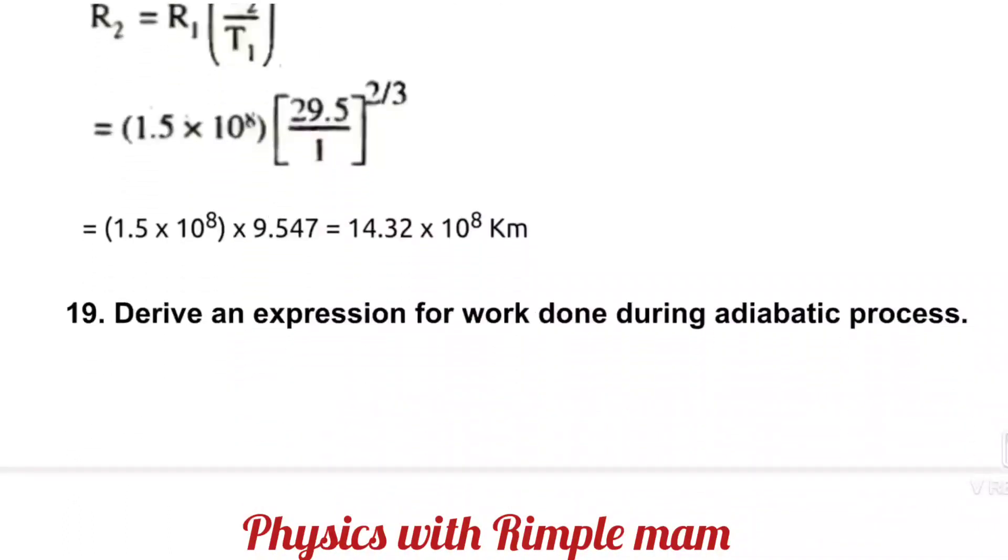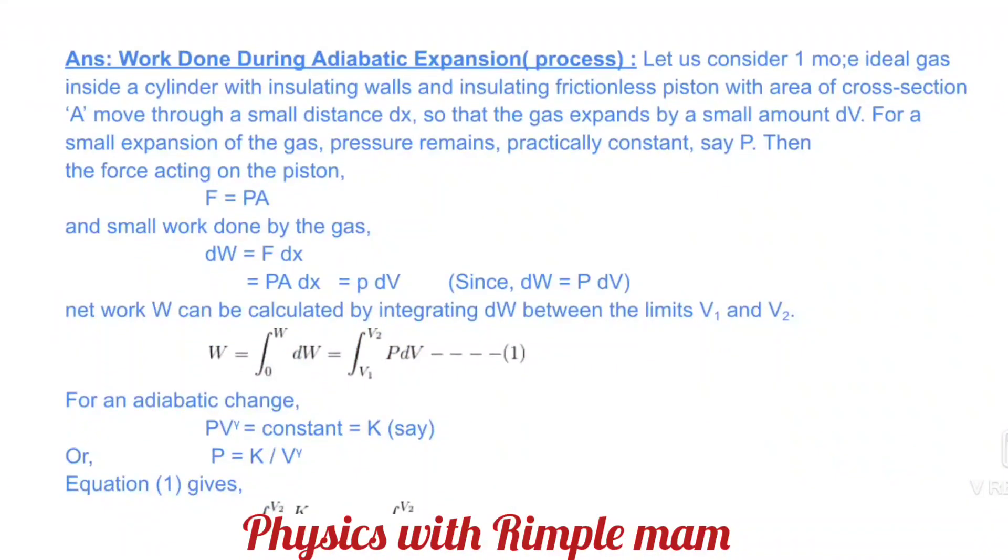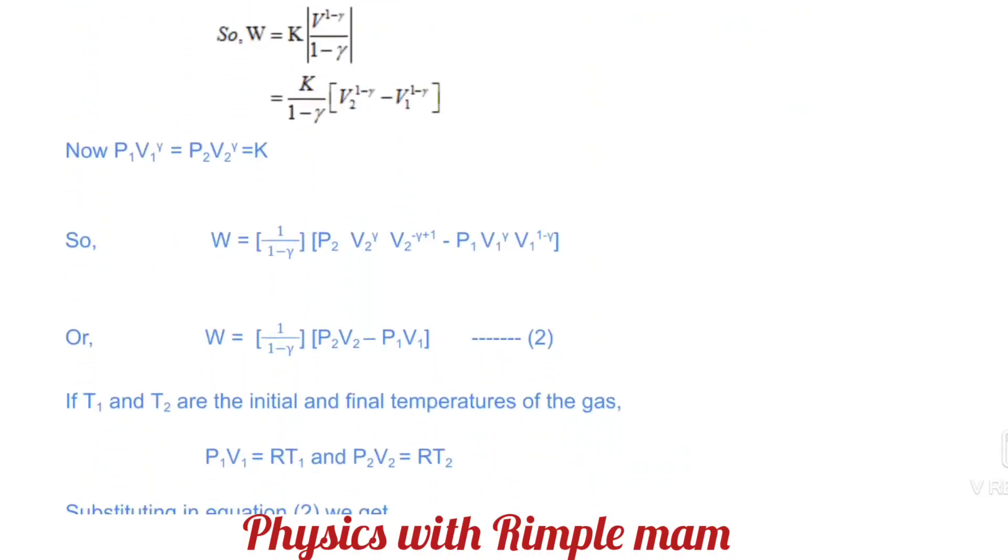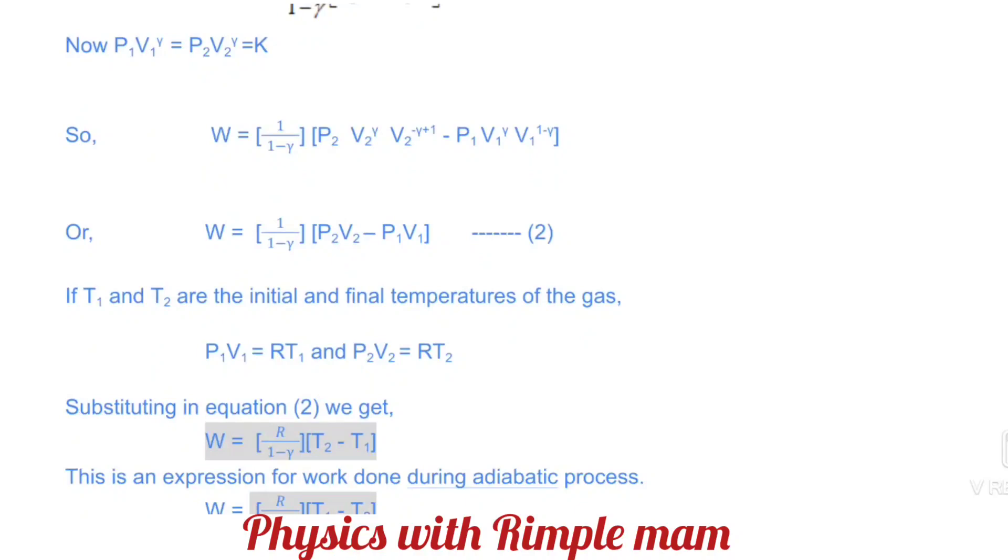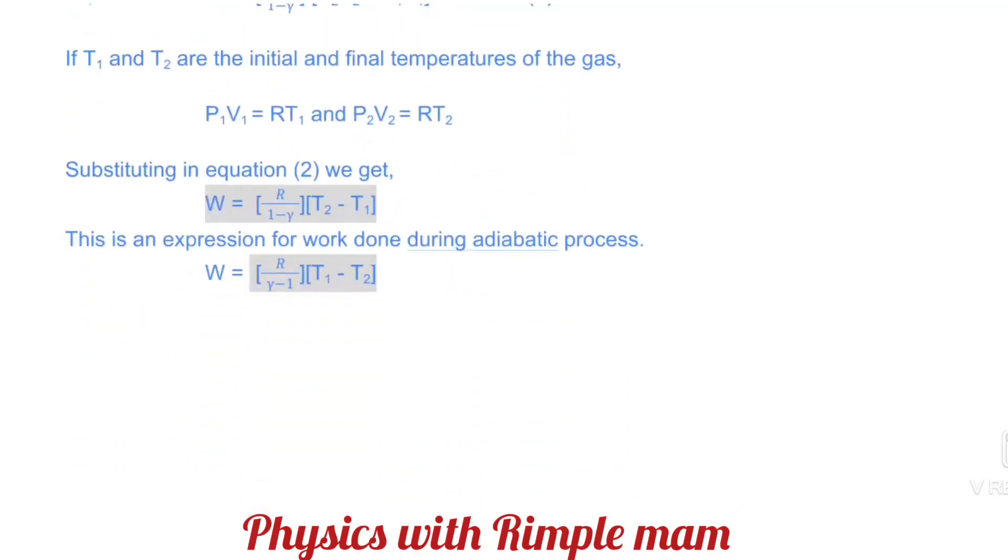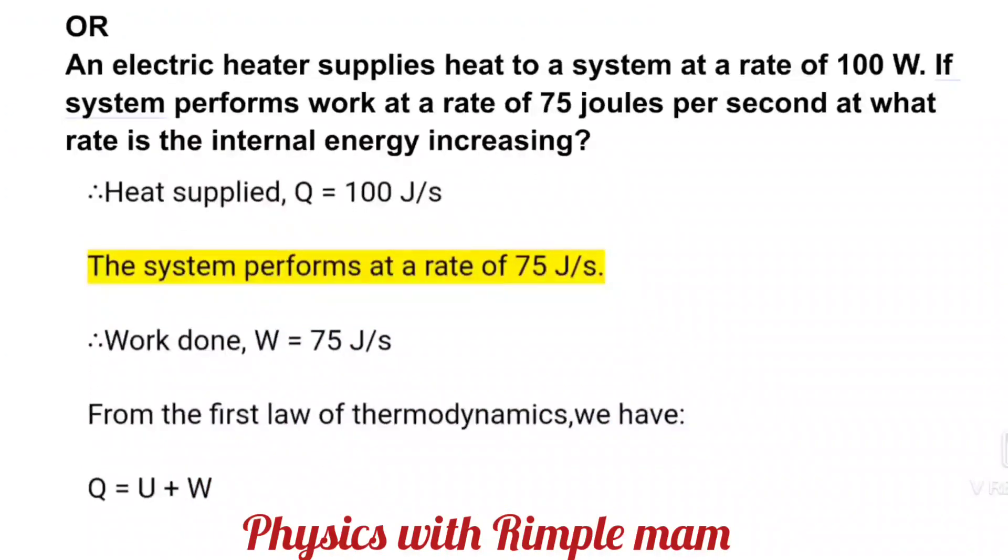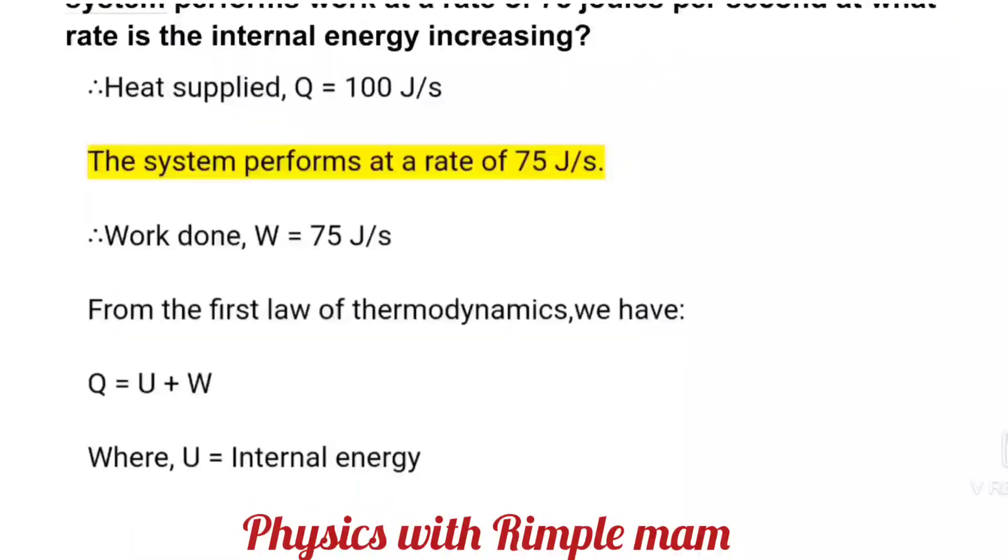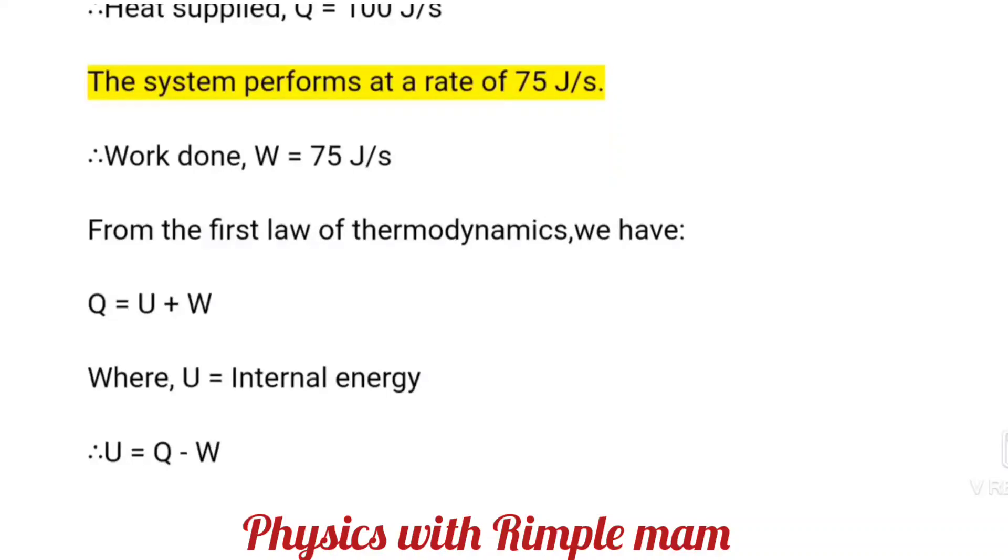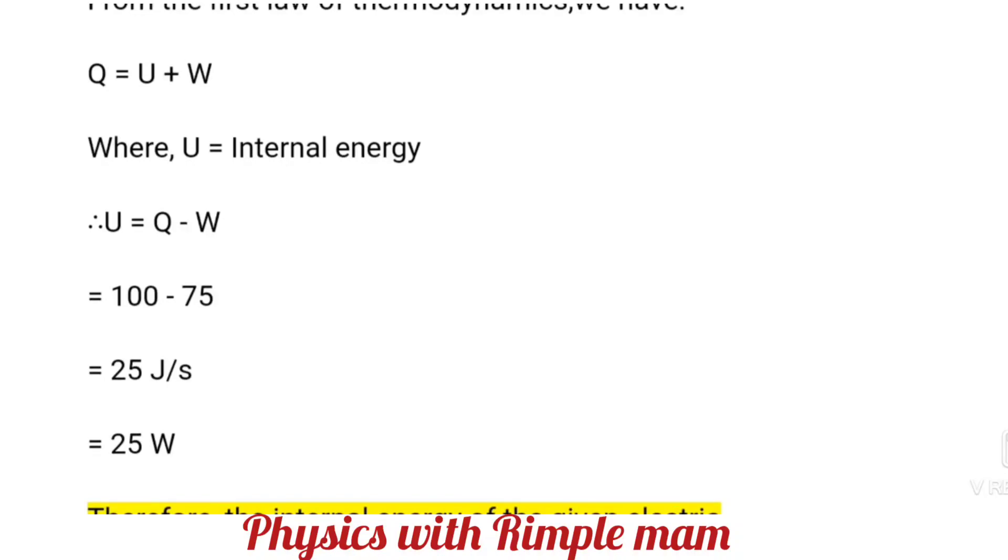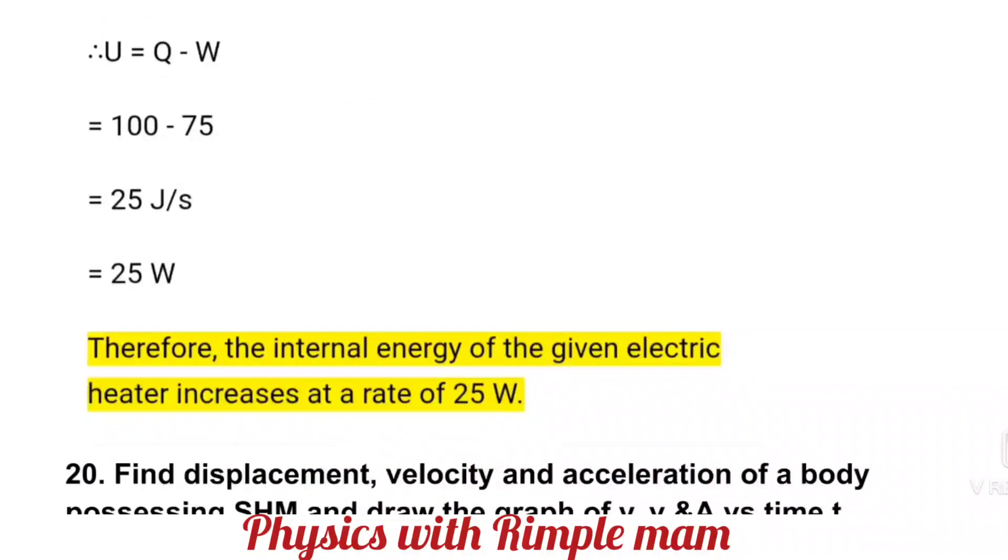That means the gravitational force, then write the definition of gravitational constant. This is a simple and direct question, so I'm not explaining it. Next numerical: Saturn's year is 29.5 times Earth's year. How far is Saturn from the Sun if Earth is 1.5 × 10⁸ km away from the Sun? Apply Kepler's third law. From the definition, we need to find r₂. r₁ value is given as 1.5 × 10⁸, T₂ is given as 29.5, and T₁ we consider as 1. Just solve and calculate to get your answer.